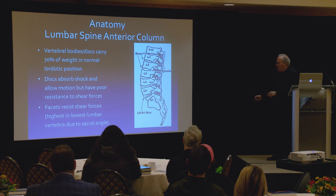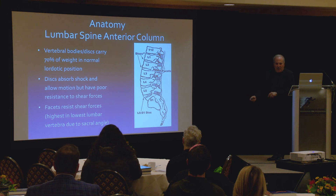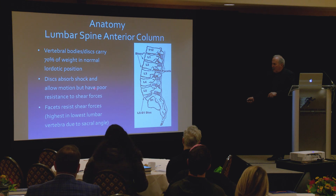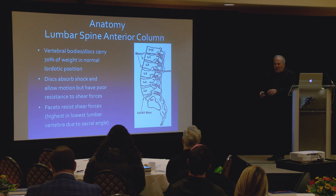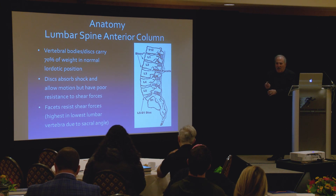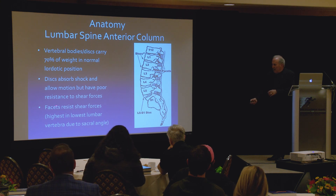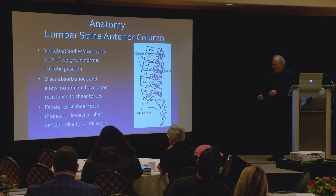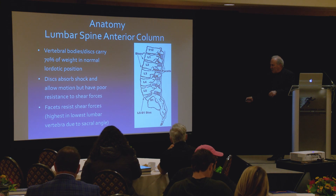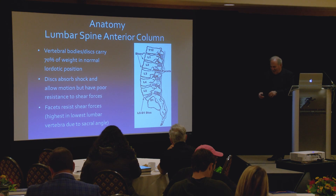The anterior column — the vertebral body, the disc, and the ligaments in front and back — carries 70% of the normal weight of the spine, which conversely means the facets carry 30% of the weight. The discs absorb shock and allow motion but have poor resistance to shear forces. The disc is fine for compression, fair for rotation, and really poor when it comes to shear forces. What resists shear forces are the facets — I like to call them the doorstops. With the lumbar spine lordosis and the sacrum at a 45-degree angle, the lowest two discs have the greatest shear forces and therefore the most strain on the facets.